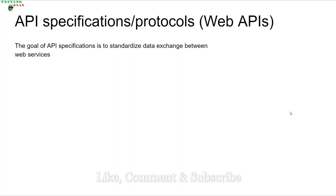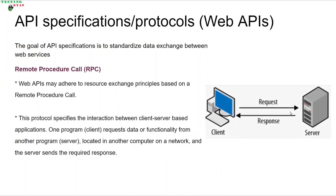There are a few specifications or protocols which govern the communication between web-based applications. The goal of an API specification is to standardize the data exchange between different web services. This web specification revolves around the principle of remote procedure call, which is simply a client-server principle where the client is an application that sends the request and the server sends the response back to the client. Web APIs may adhere to resource exchange based on the remote procedure call.